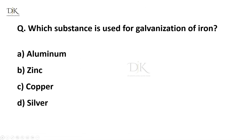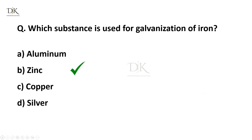Which substance is used for galvanization of iron? Right answer is zinc.